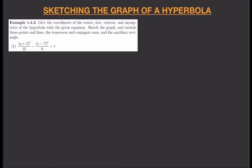In this video we are going to sketch the graph of a hyperbola. We need to find the coordinates of the center, foci, vertices, and asymptotes of the hyperbola with a given equation, sketch the graph, and include the transverse and conjugate axes and the auxiliary rectangle. The equation we're looking at is (y + 2)² / 25 minus (x - 7)² / 9 = 1.